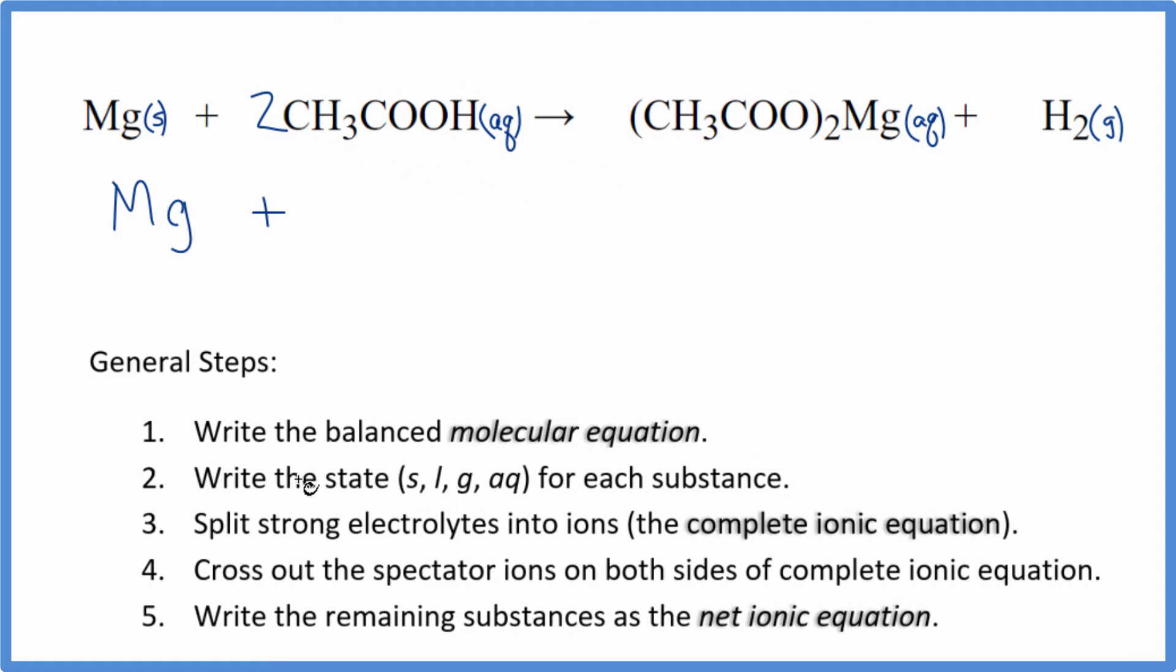And then for the acetic acid here, we said it's a weak electrolyte. We only split up strong electrolytes into their ions. So we're not going to split this up. So we'll have 2CH3COOH. You'll often see people split this up. You shouldn't do that, though, since it's a weak acid. It's a weak electrolyte, and we only split up the strong electrolytes.